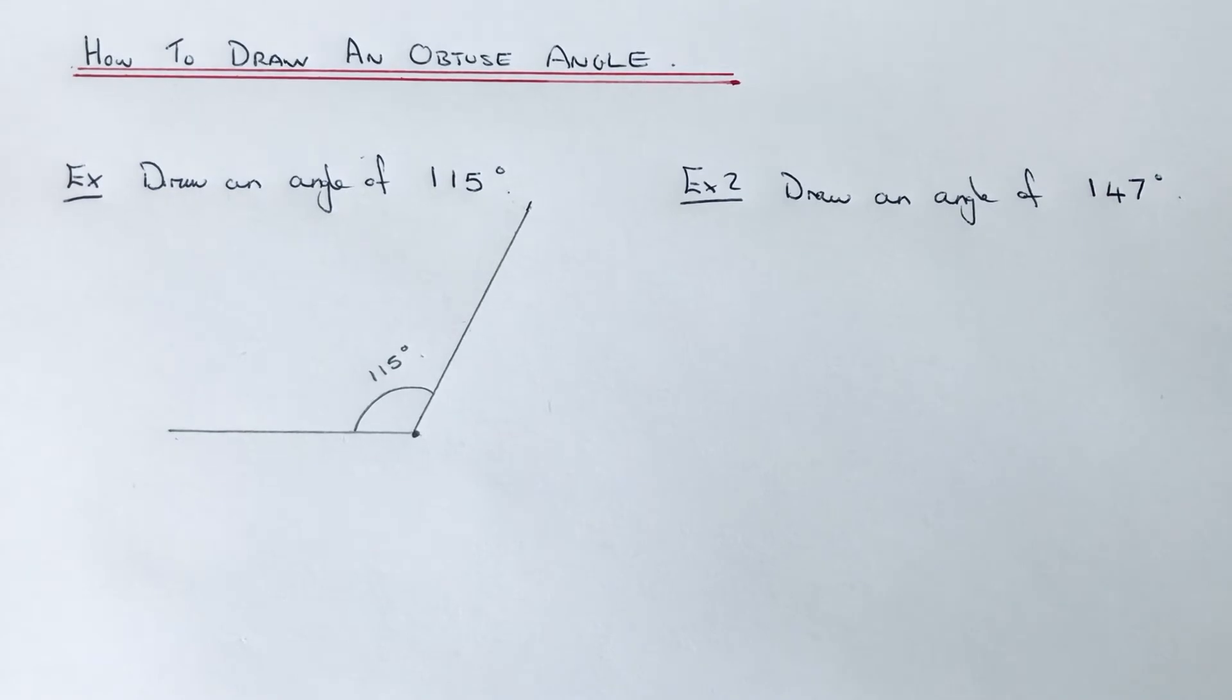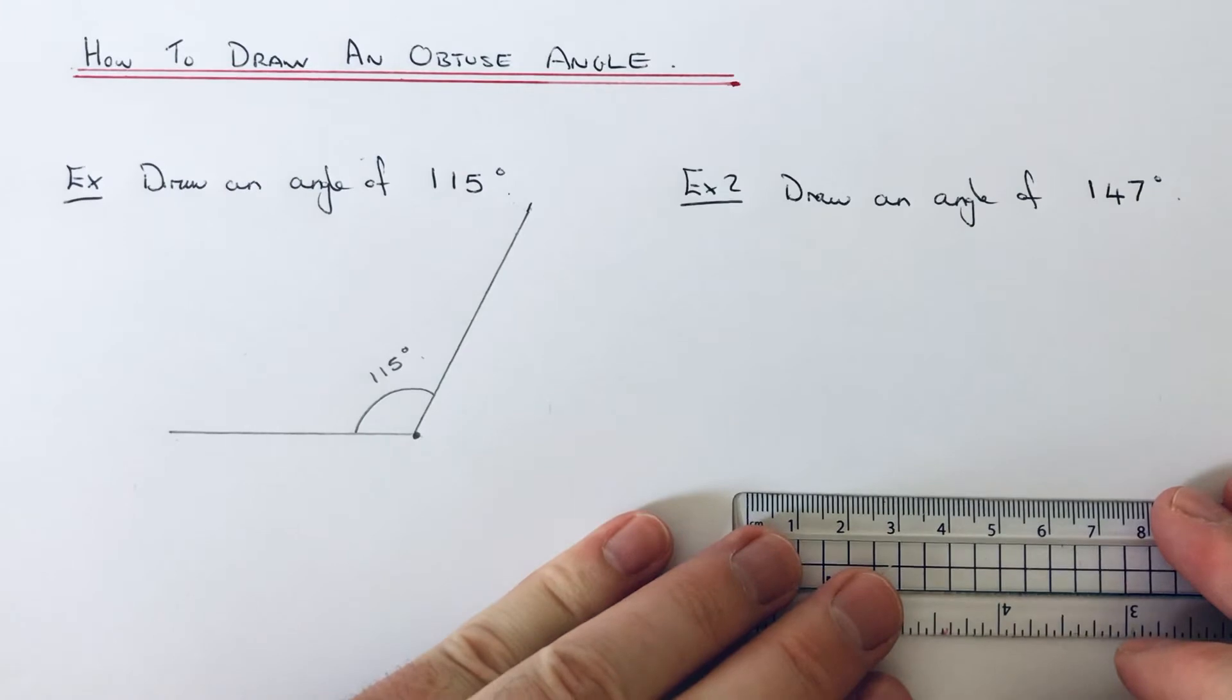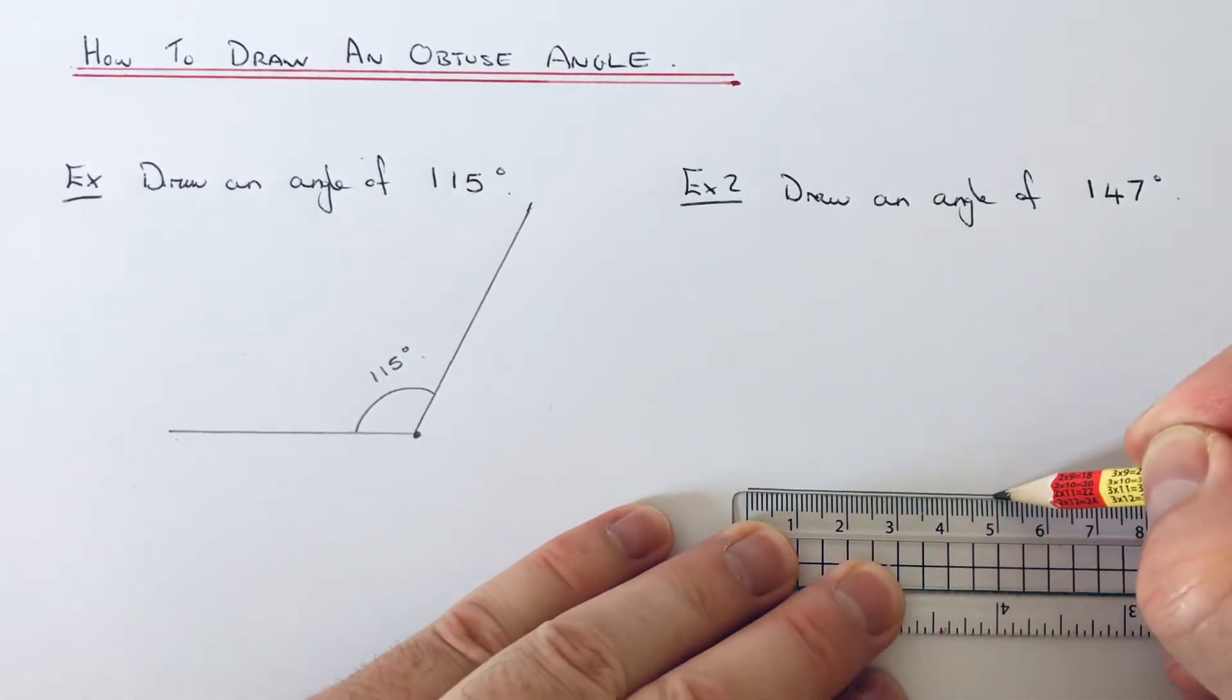So let's have a look at the second one. This time we've got another obtuse angle of 147 degrees. So again, if we draw our baseline, I'm going to make it about five centimeters long.